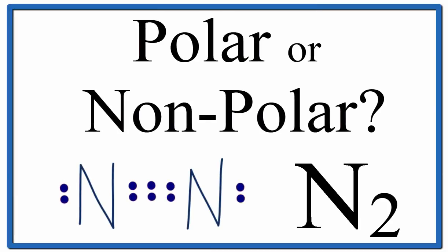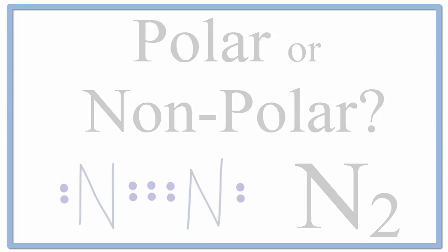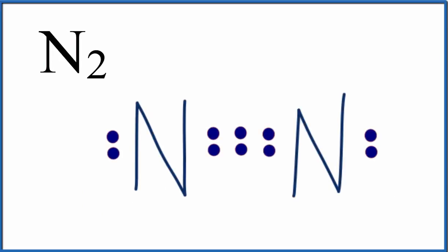To determine if N2 is polar or nonpolar, let's first look at the Lewis structure that describes the distribution of valence electrons around the molecule, and then it can help us determine polarity.